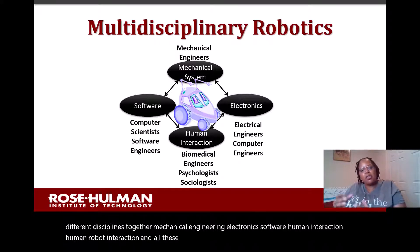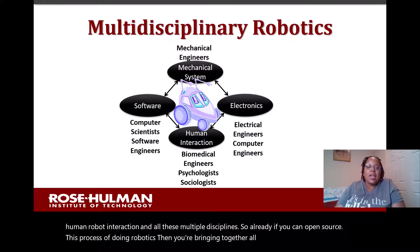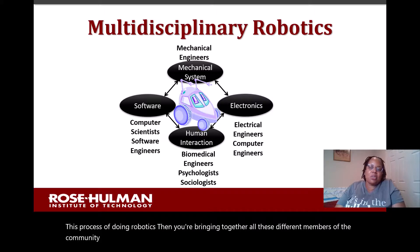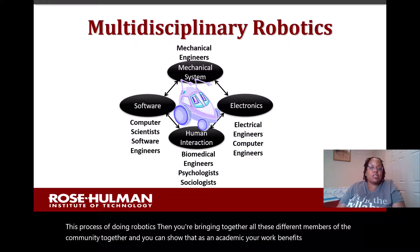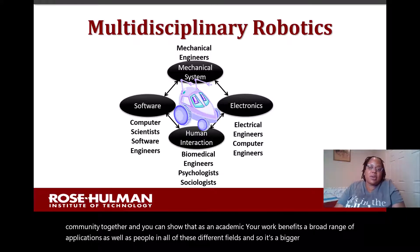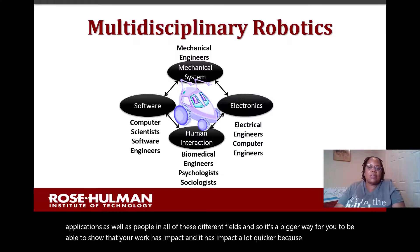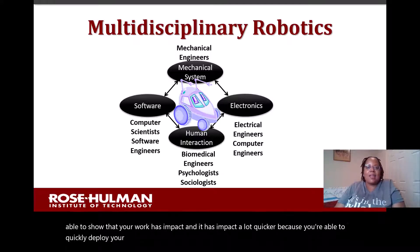So if you can open source this process of doing robotics, then you're bringing together all these different members of the community. As an academic, you can show that your work benefits a broad range of applications as well as people in all of these different fields — it's a bigger way to show that your work has impact, and it has impact a lot quicker because you're able to quickly deploy your system and have other people test it out and improve it.